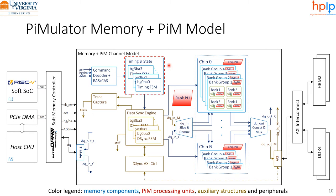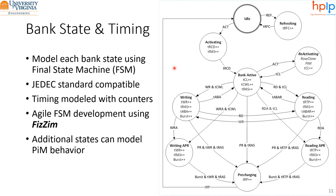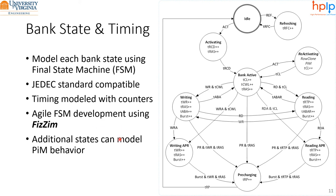Let's have a detailed look at the timing and state model. We model the state of each bank using finite state machines compatible with JEDEC standards. Memory timings are modeled using counters that, together with decoded commands, condition state transitions. For example, the bank will go from bank-active to reading upon receipt of the read command and expiry of the tCL counter. The state machine is implemented and generated by FiSim, an easy-to-use tool that facilitates further adaptability. With this approach, we can model the states and latencies of any memory standard, as well as additional states for PIM to occur, such as a reactivating state for RowClone and Ambit.